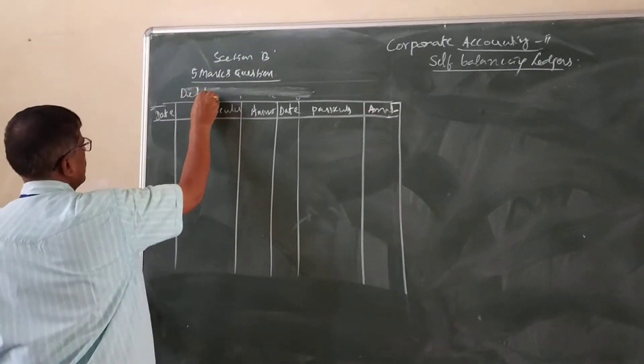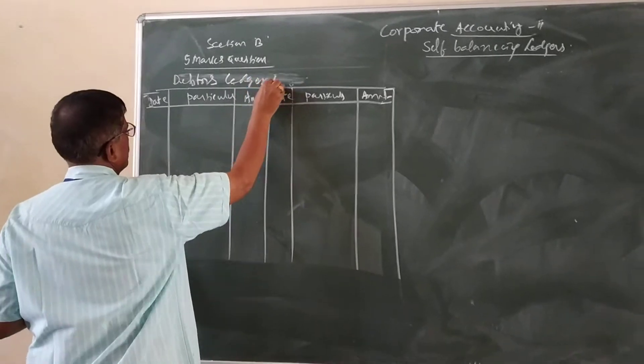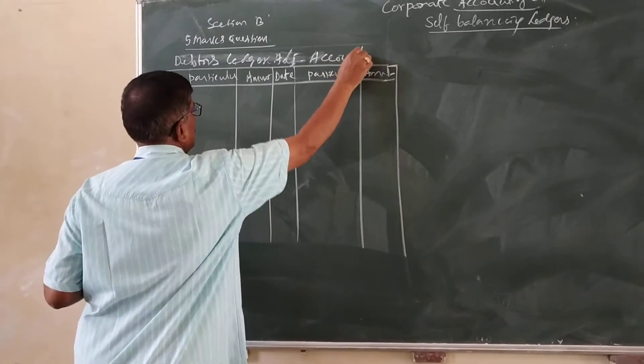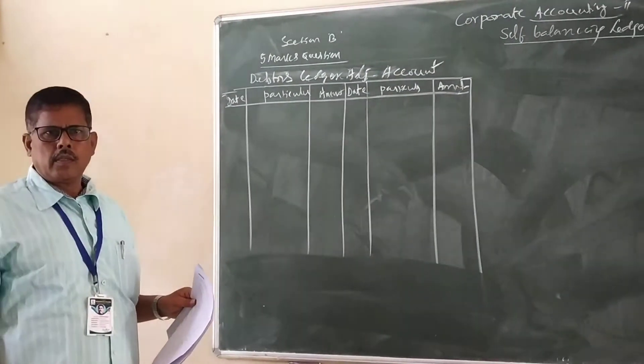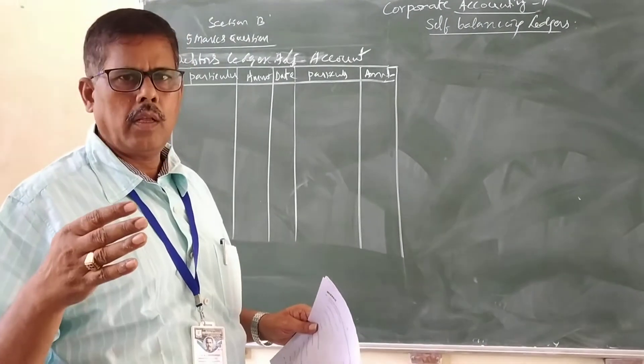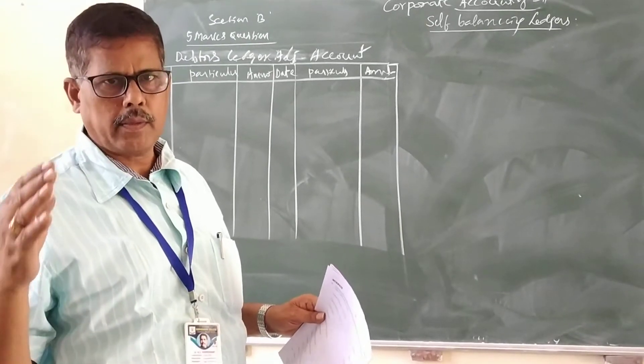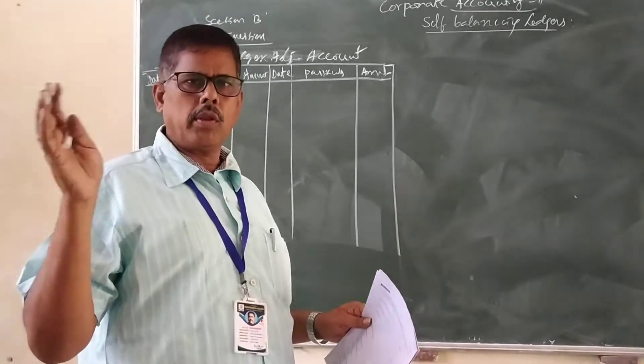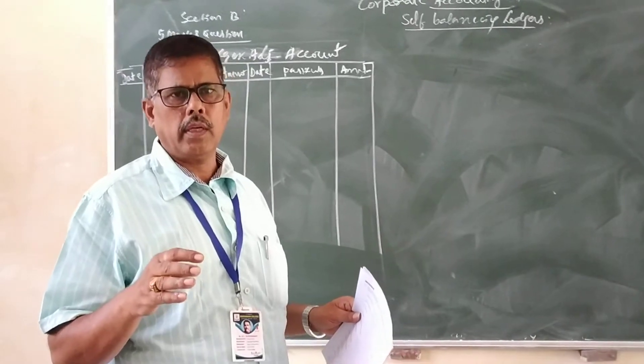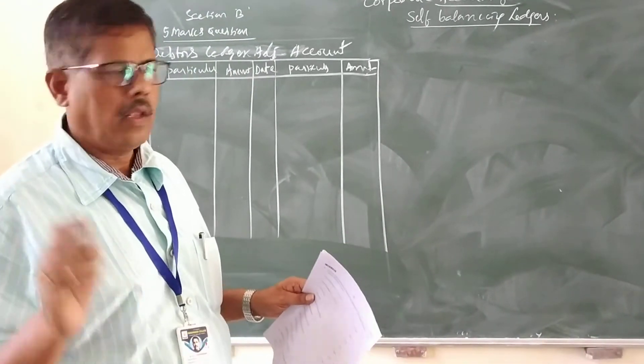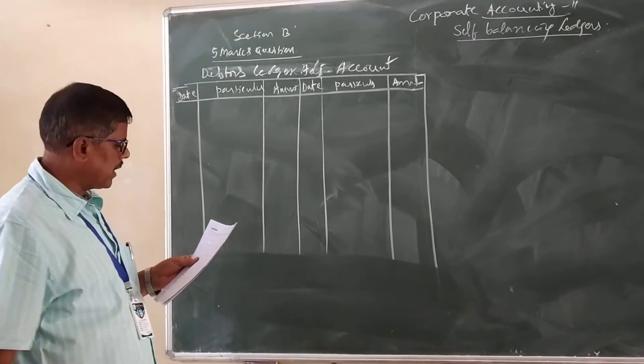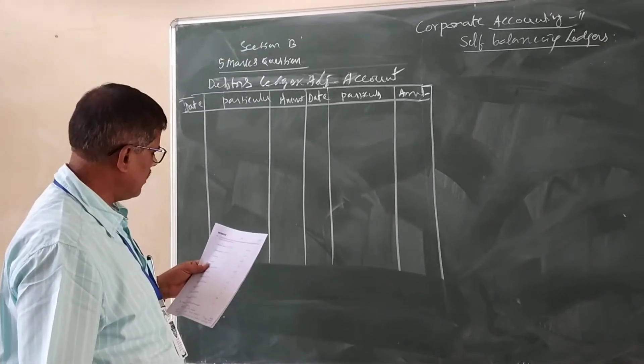First I will show you how to prepare the debtor's ledger adjustment account. In the case of section 5 marks portion, debtor's ledger adjustment account. My kind request is you should remember the pro-forma of debtor's ledger adjustment account. Without the idea of these two accounts, it is very difficult to understand.